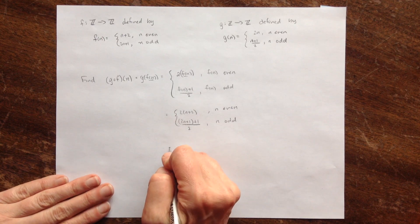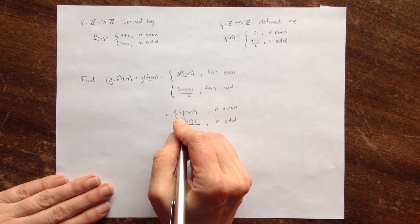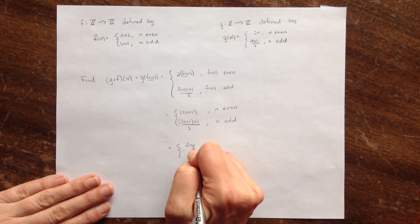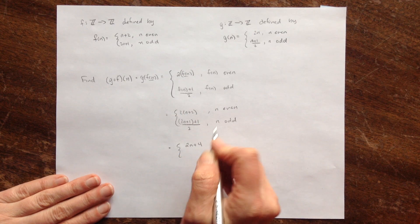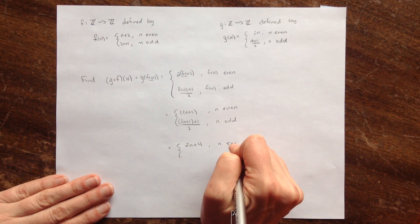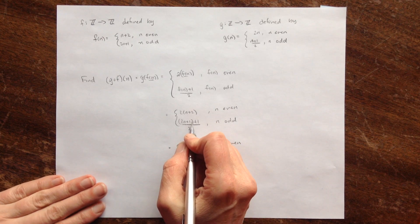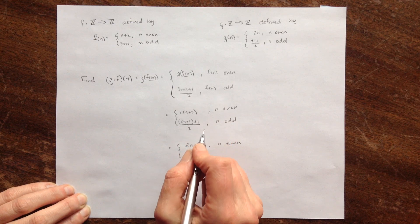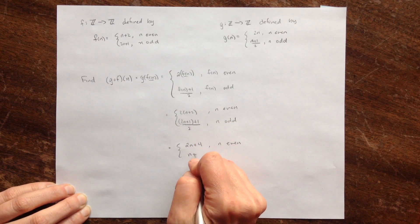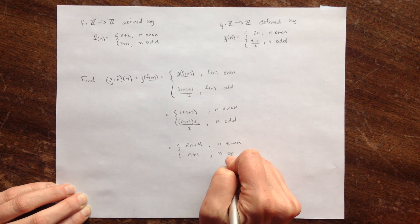Now I'm going to clean this up algebraically. I like it distributed — I think it's a little prettier. If n is even, we get 2(n plus 2). And (2n plus 1 plus 1) over 2 simplifies: 2n plus 2 over 2 is just n plus 1, if n is odd.